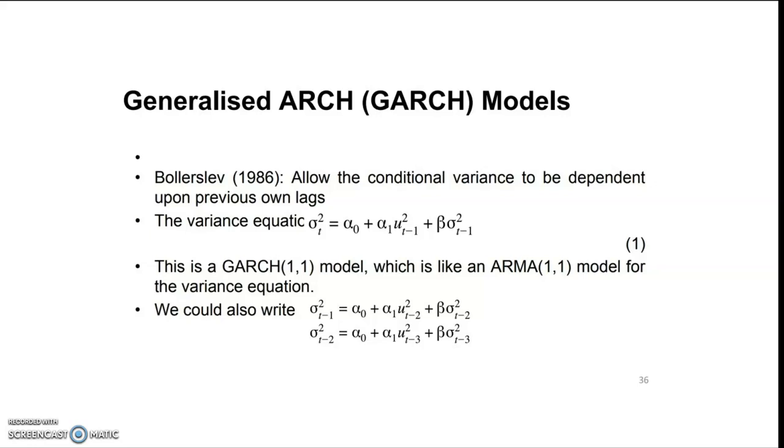The variance equation is σ²t = α₀ + α₁ut₋₁² + β₁σ²t₋₁. This is the GARCH(1,1) model, which is like an ARMA(1,1) model for the variance equation.